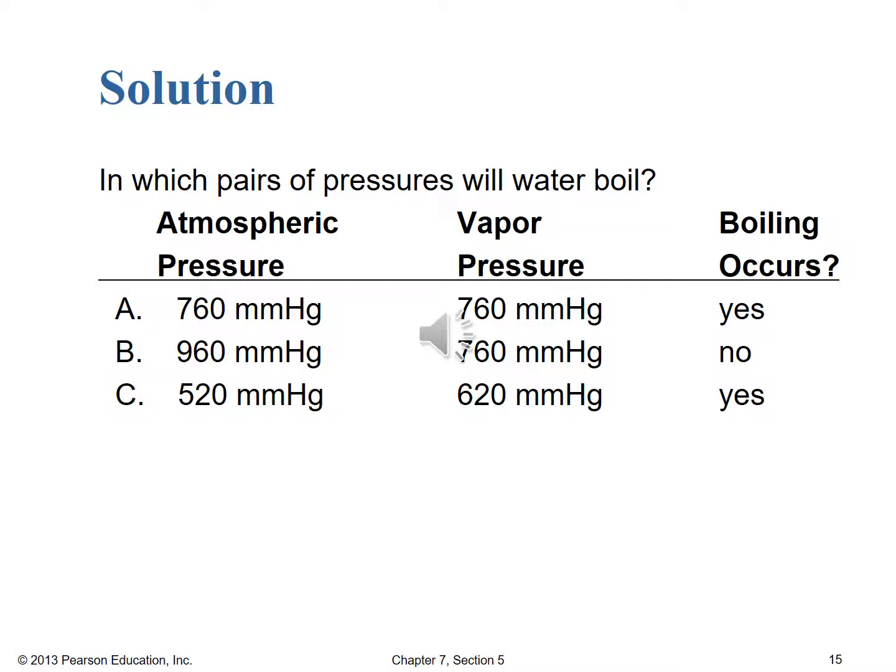Hopefully you didn't fall for the trick — you needed to make two selections, not one. In case A, atmospheric pressure is 760 mmHg and vapor pressure is also 760 mmHg, so we're right at the boiling point and boiling occurs. In case B, atmospheric pressure is 960 mmHg versus 760 mmHg vapor pressure — because vapor pressure is below atmospheric, we won't get boiling, only evaporation. In case C, atmospheric pressure is only 520 mmHg versus 620 mmHg vapor pressure — because vapor pressure exceeds atmospheric pressure, boiling will occur.